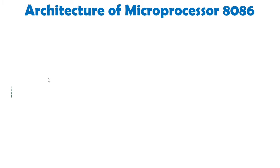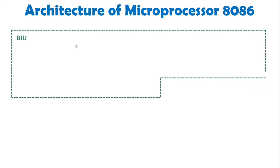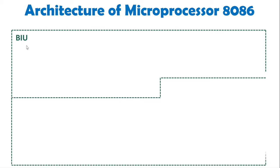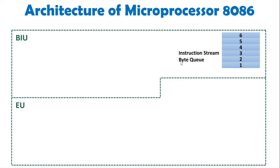Microprocessor 8086 is bisected into two parts: Bus Interface Unit and Execution Unit. The first component of the BIU is the instruction stream byte queue, which is six bytes in size. This six-byte register is used for prefetching instructions. The 8086 performs pipelining — fetch is done by the BIU and execution is done by the EU — and the prefetched instructions are stored in this six-byte register.